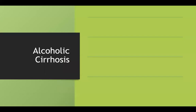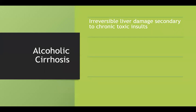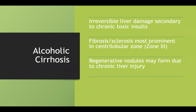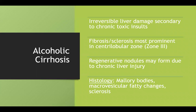Alcoholic cirrhosis is basically the final form of each of these diseases — irreversible liver damage from chronic insults. Fibrosis and sclerosis are most noticeable in the centrilobular zone, due to that zone's high P450 enzyme and mitochondrial content. Regenerative nodules may form from chronic liver injury, and histology shows Mallory bodies, macrovesicular fatty changes, and fibrosis.